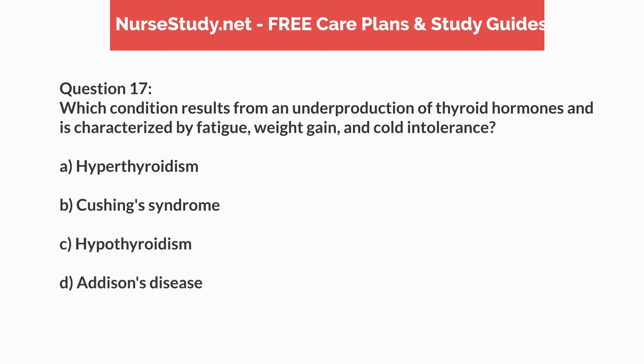Question 17. Which condition results from an underproduction of thyroid hormones and is characterized by fatigue, weight gain, and cold intolerance? A. Hyperthyroidism. B. Cushing's syndrome. C. Hypothyroidism. D. Addison's disease.